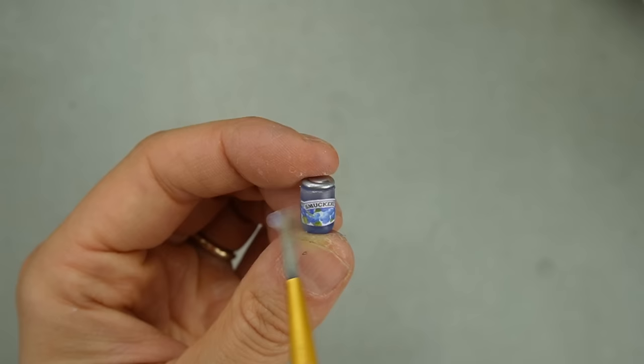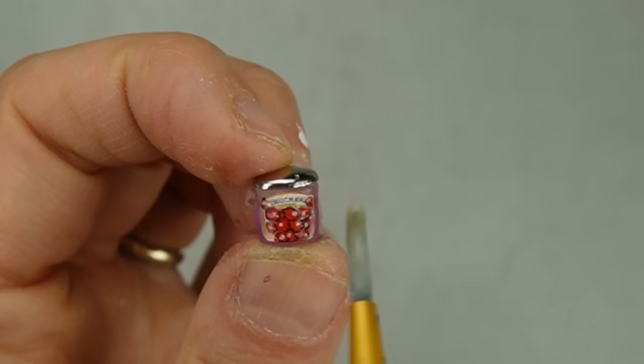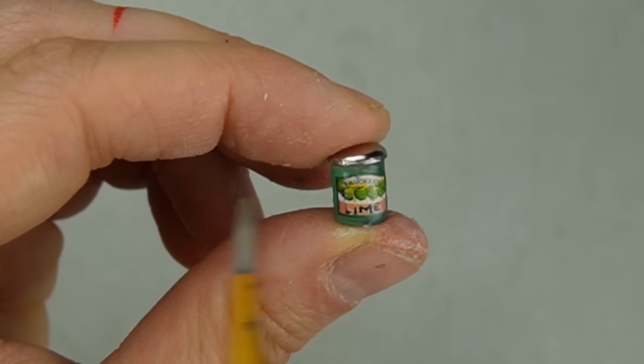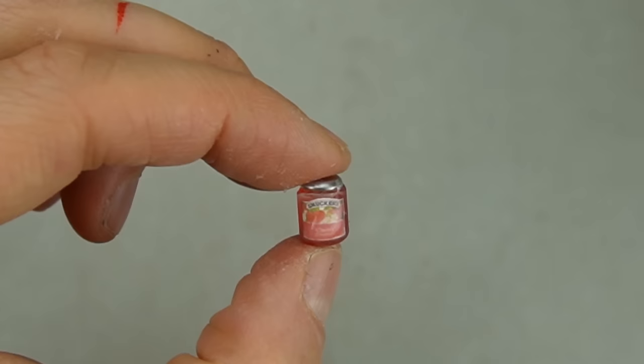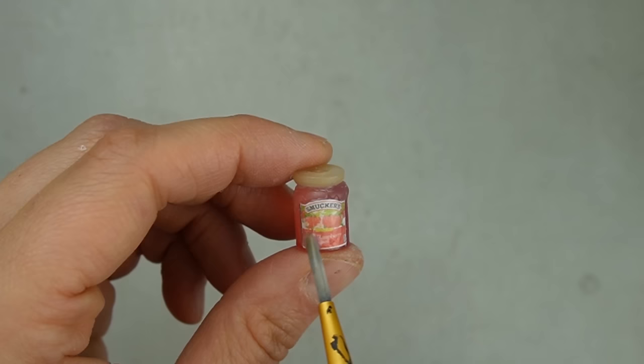For the grand finale I covered all of the jars with some glaze to protect the labels and make them look shiny. These are two more modified Smucker's labels I didn't show you earlier. For the jars that got fabric lids I sealed them before adding the fabric.